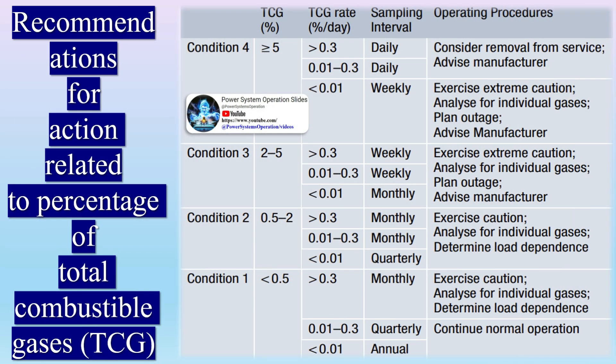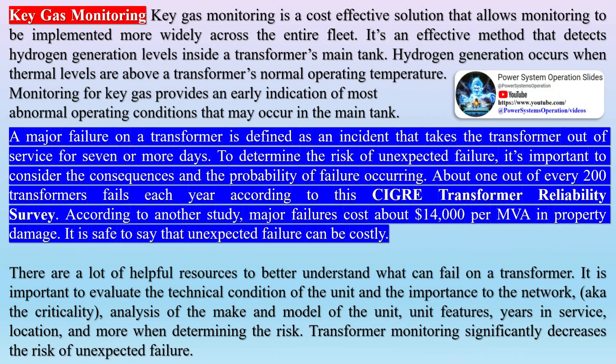There are a lot of helpful resources to better understand what can fail on a transformer. It is important to evaluate the technical condition of the unit and the importance to the network, a.k.a. the criticality, analysis of the make and model of the unit, unit features, years in service, location, and more when determining the risk. Transformer monitoring significantly decreases the risk of unexpected failure and can assist in extending the life and performance of a transformer.